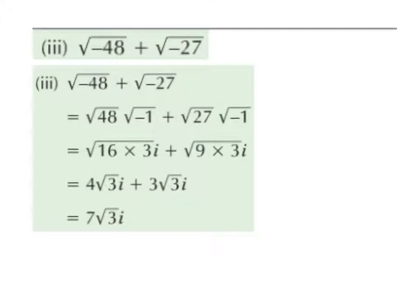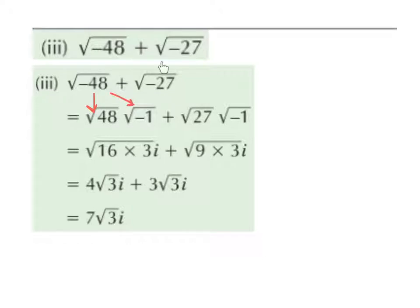Part 3. Finally, simplify the square root of minus 48 plus the square root of minus 27. We cannot get the square root of a negative number, so the square root of minus 48 we break down to be the square root of positive 48 multiplied by the square root of minus 1. And the square root of minus 27 we break down to be the square root of positive 27 multiplied by the square root of minus 1.